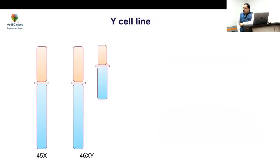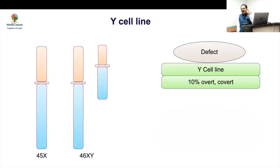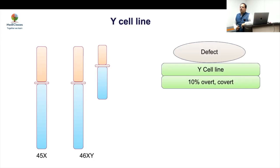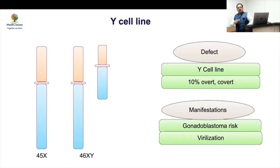A Y cell line is present in around 10% of cases in both covert and overt forms. All guidelines for gonadectomy are based on conventional karyotype. You do not need to do an extensive search for a Y cell line in every case. However, if there is a marker chromosome, or virilization at puberty, or if it is found on conventional karyotype, you have to seriously consider gonadectomy.